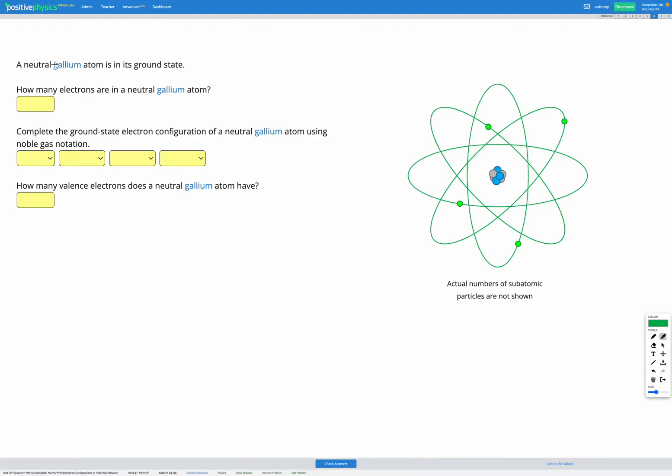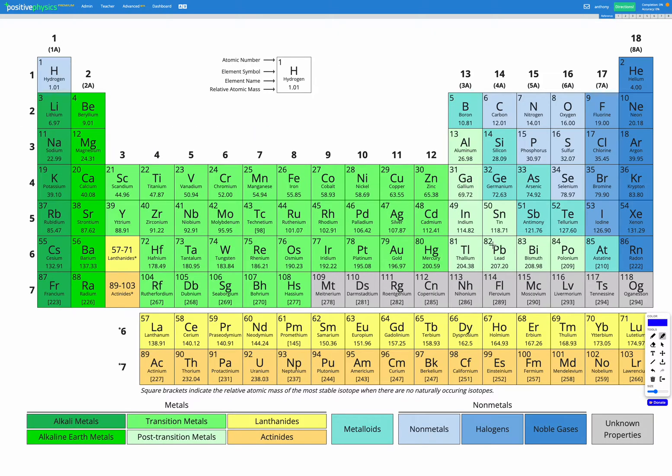In this question, we have a gallium atom, and we're going to be figuring out its electron configuration. So first step is to go to our periodic table, find gallium, and figure out how many electrons we have. So gallium is here in our periodic table.